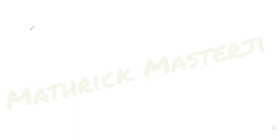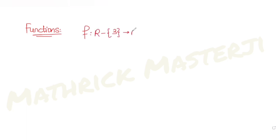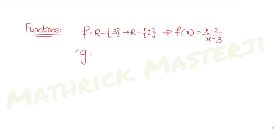Hi guys, I hope you are all doing well. Today's question is from the topic of functions. The question tells us: let f be a function with f(x) defined as (x minus 2) divided by (x minus 3), and the other function g(x) is given as 2x minus 3.